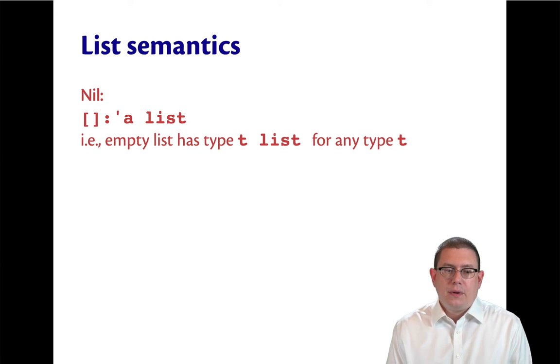As for type checking, the empty list has type alpha list. Another way of thinking of that is no matter what you want to stick into a list that is empty, that is, no matter what you want to cons onto the front of it, you're going to be able to do that because there's nothing in it yet. So you can think of that list as having any element type that you want.